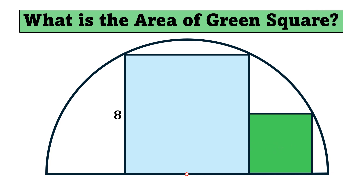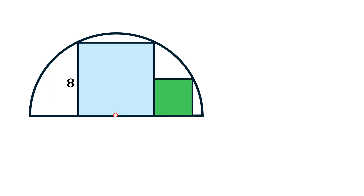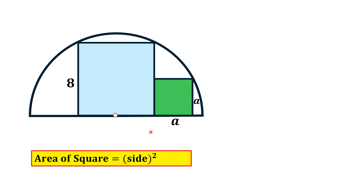We have to find the area of the smaller green-shaded square. Let's move towards the solution. Let the side length of the smaller square be A. We know the area of a square equals the square of its side, so the area of this green square will be A². Our task is to find A².